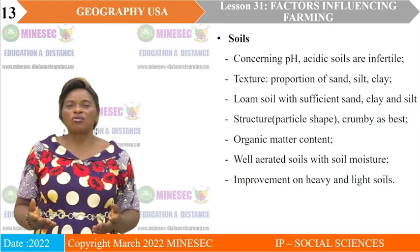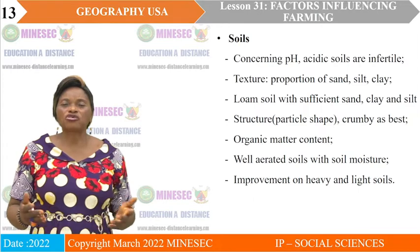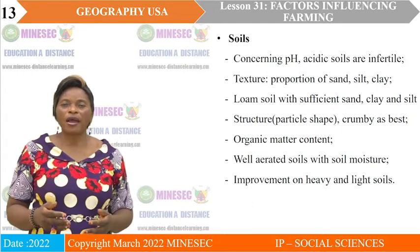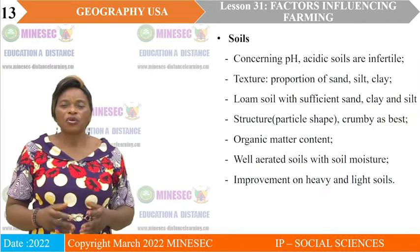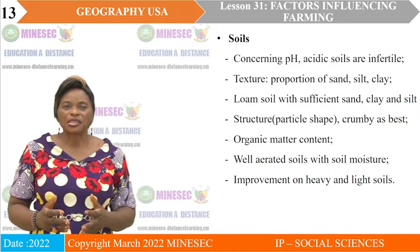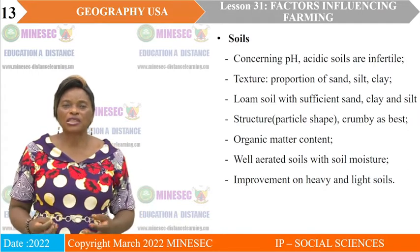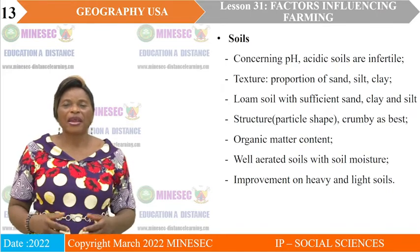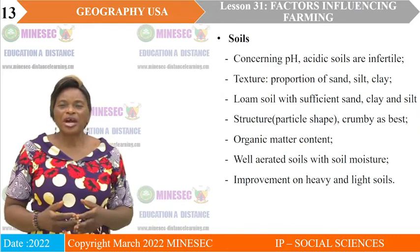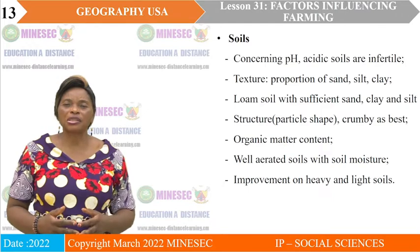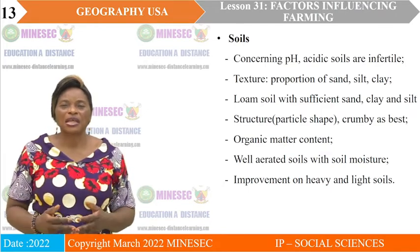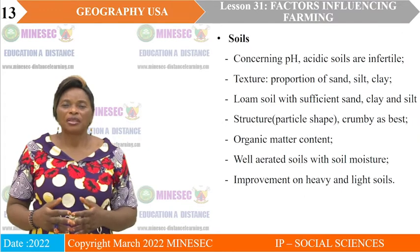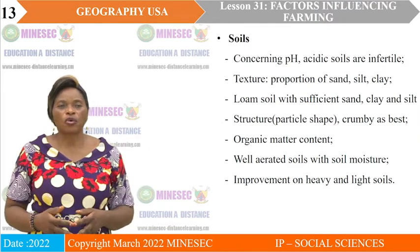For soil structure — the sizes of particles — structures that can hinder plant growth include platy, columnar, blocky, and prismatic. The best structure that can permit crop growth is the crumb structure because it is aerated and water can penetrate. For organic matter content, humus-rich soils like tropical black earths and chernozems are the best soils for plant growth. Others without much organic matter will hinder plant growth to a certain extent.